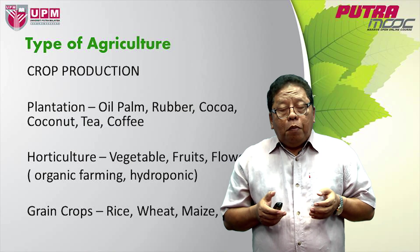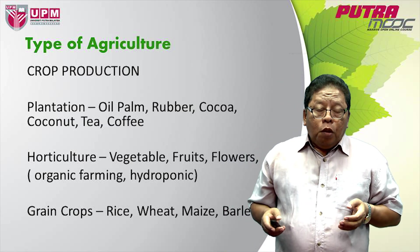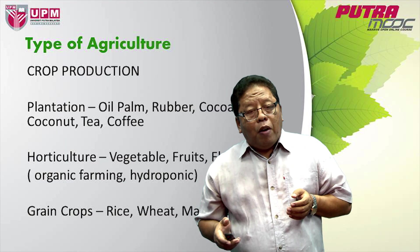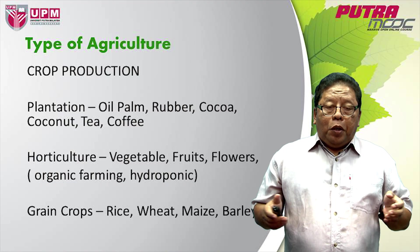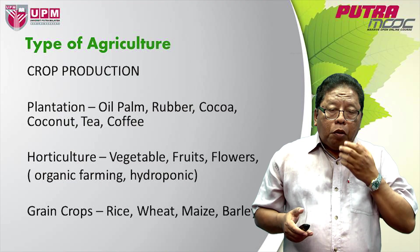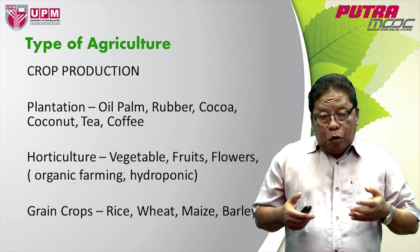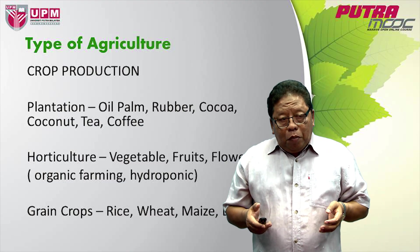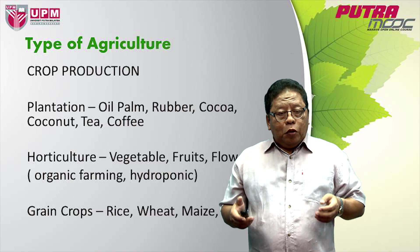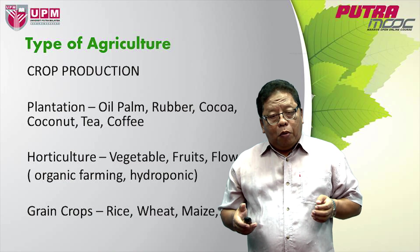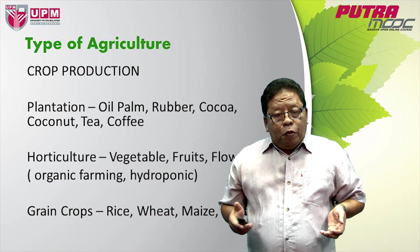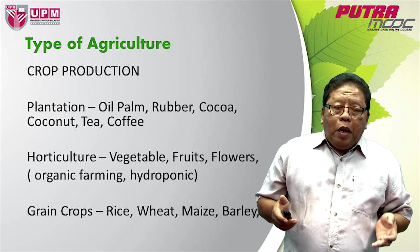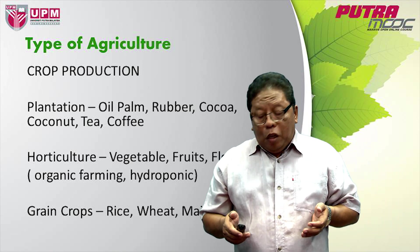We also have horticulture crop production. This includes production of vegetables, fruits, and flowers, including organic farming and also hydroponics, which is the soilless culture — they don't use soil. And there are grain crops, which are very common because most of these grain crops are staple food for most people in the world, like rice, wheat, maize, barley, and oats.